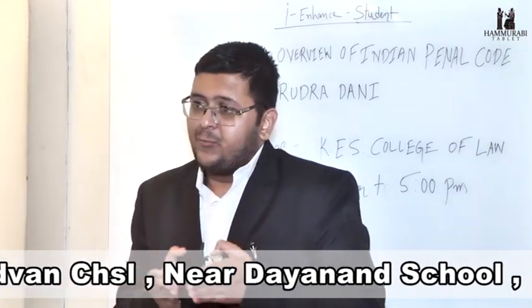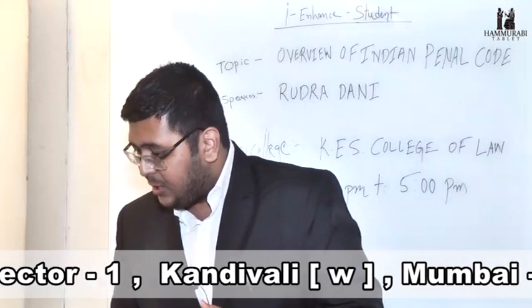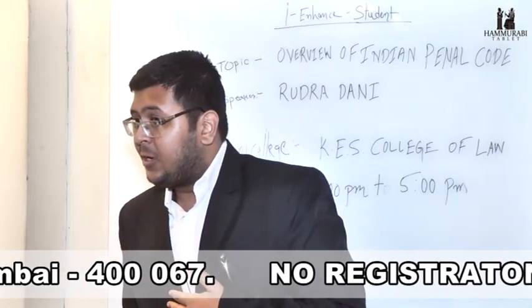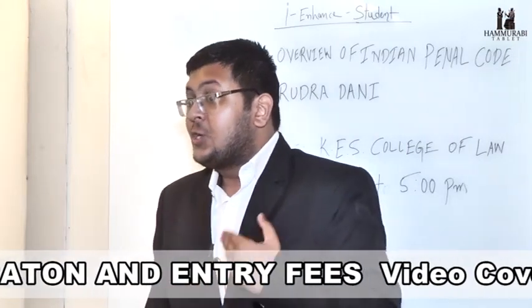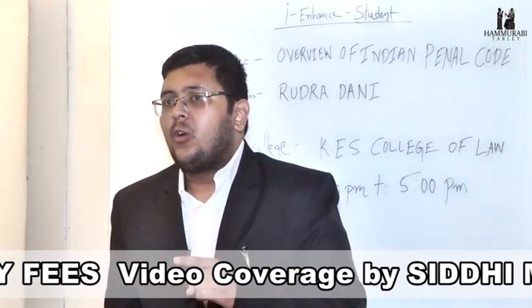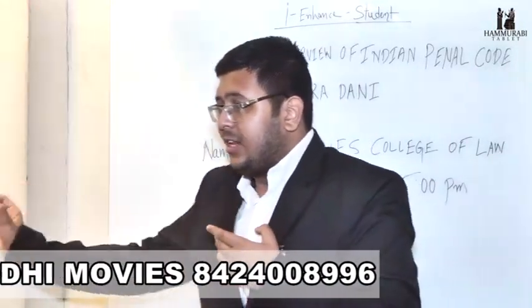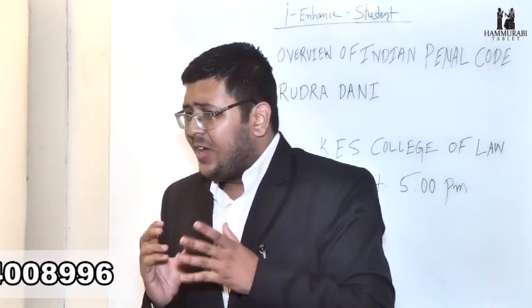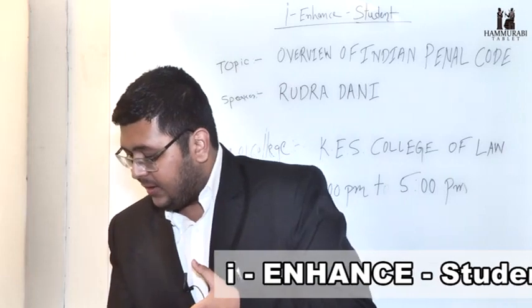Regarding life imprisonment, there are many debates — some say the term is 14 years, others say 20 years. However, Section 376 on punishment for rape clearly states that life imprisonment means the natural remainder of the offender's life. Under the IPC, there are 55 offenses covered under life imprisonment. Solitary confinement means the prisoner is confined within a room with only a small hall allowing some sunlight; the Supreme Court has issued many guidelines regarding its application.